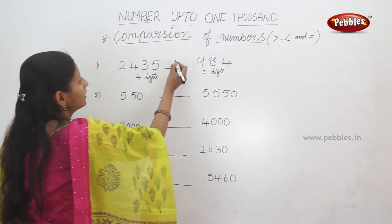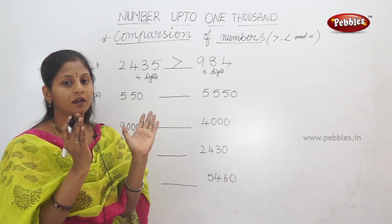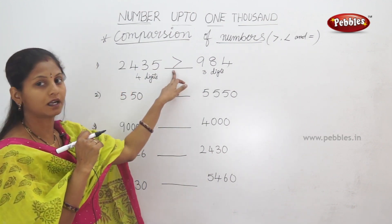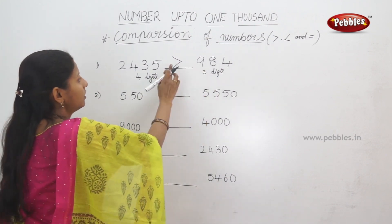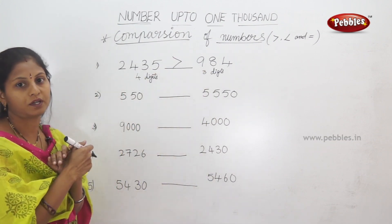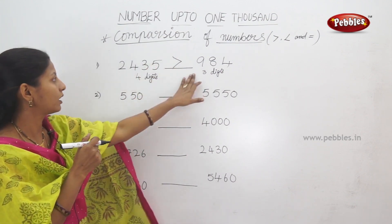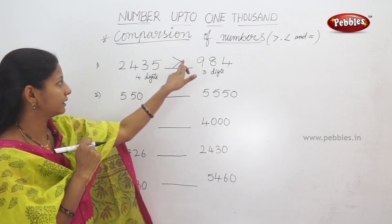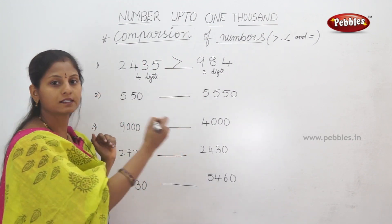So, the four-digit number is greater than 192. In this V-shape, the open side points to the bigger number. The right side open is less than. When we compare these two numbers, the four-digit number is bigger.